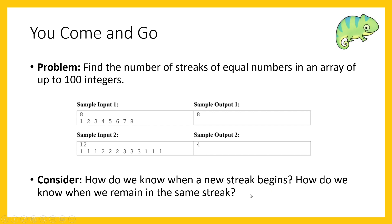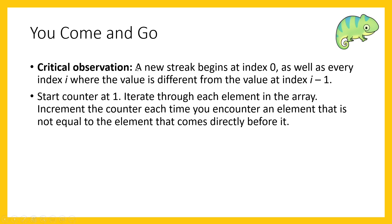The key question is: how do we know when a new streak begins? A new streak begins at index 0 and at every index i where the value at i is different from the value at i minus 1. In other words, start a counter at 1, iterate through each element, and increment your answer every time you encounter an element that is not equal to the element directly before it. That's all you need to do — a clean linear solution.